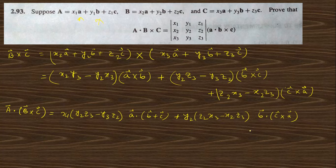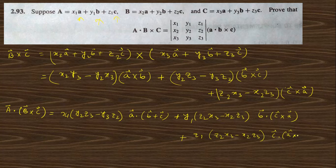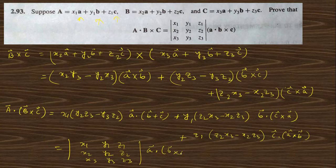This b dot (c cross a) is nothing but a dot (b cross c). Similarly for c, the zero terms drop, giving z1·(x2·y3 − x3·y2) times c dot (a cross b), which also equals a dot (b cross c). These three terms together form the determinant x1 y1 z1 / x2 y2 z2 / x3 y3 z3, with the common factor a dot (b cross c).